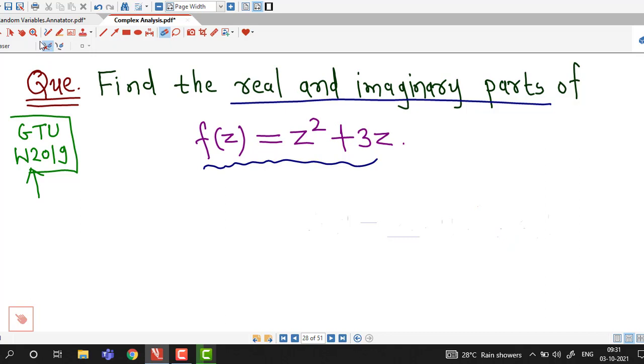We start by taking z equal to x plus i y. We will substitute z equal to x plus i y in the right hand side and try to convert it into this form: something plus i into something.